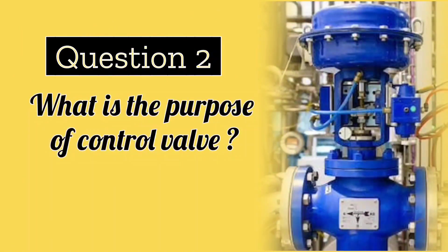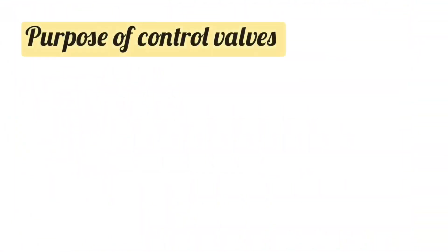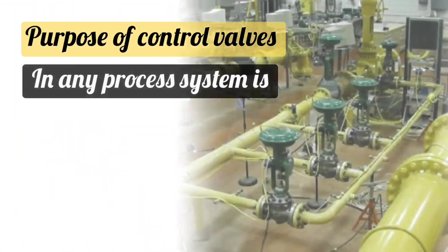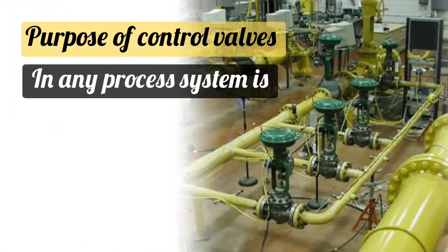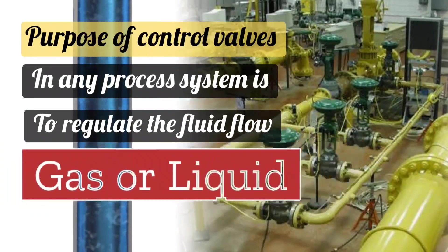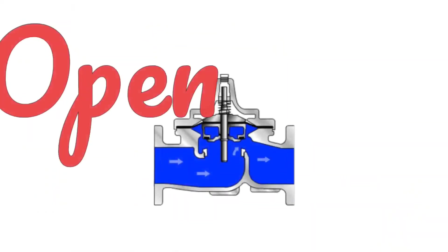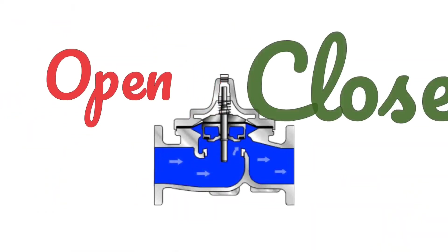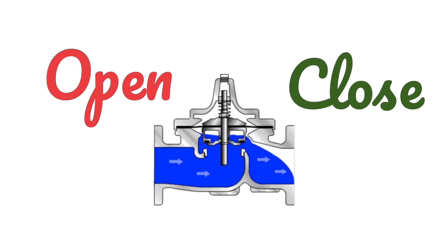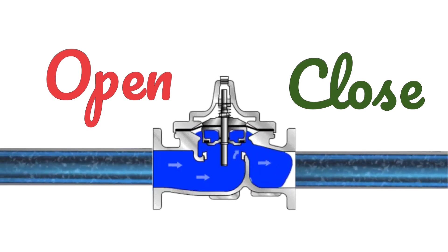What is the purpose of a control valve? How does it work? The purpose of a control valve in a process system is to regulate the flow of fluid — fluid means gas or liquid. The control valve opens or closes so that the flow of fluid passes or stops through a pipe.